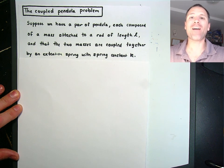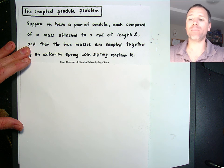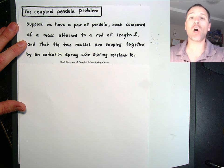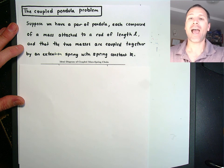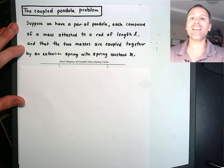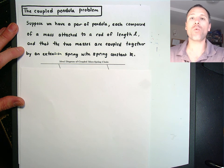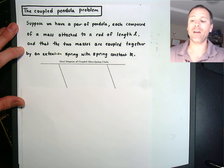So, suppose that we have a coupled pair of pendulum, each one composed of a mass attached to a long rod with length L, and that the two masses on the ends of these two pendula are connected together by a spring with spring constant k.